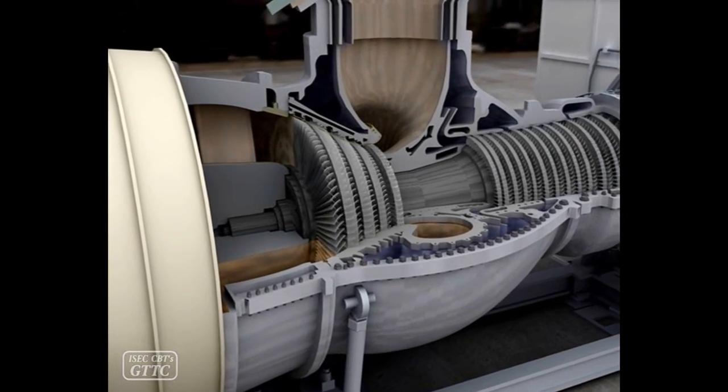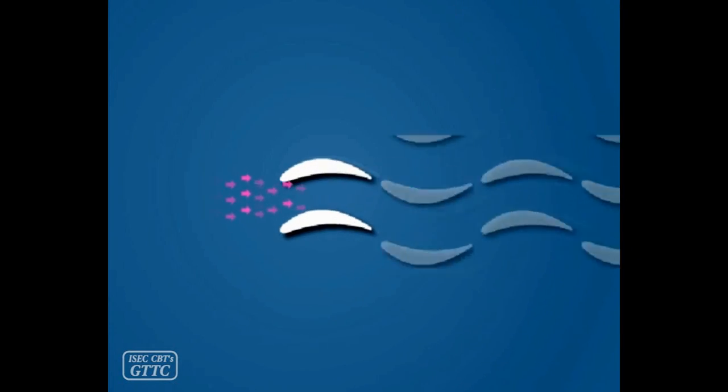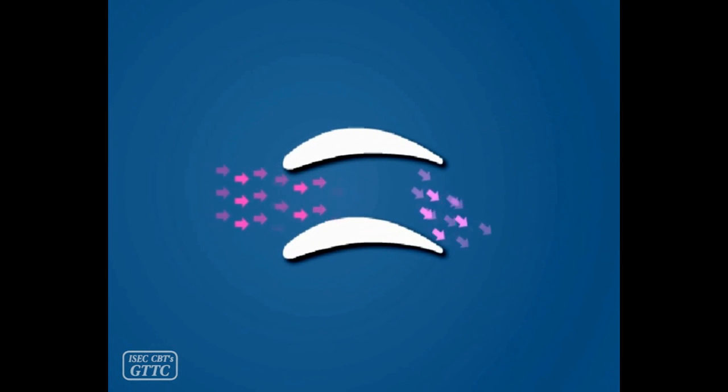The flow of hot gas enters this section of turbine. The design of turbine blades decreases pressure and increases velocity of the passing gases.